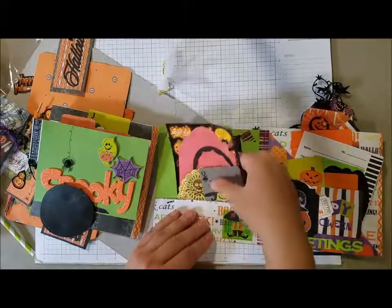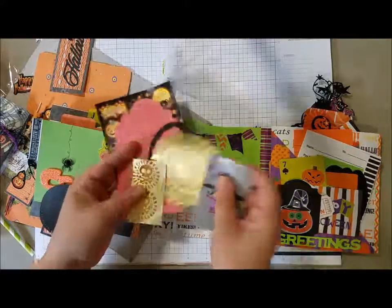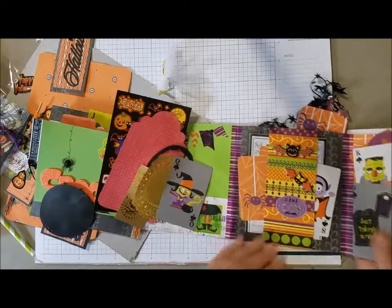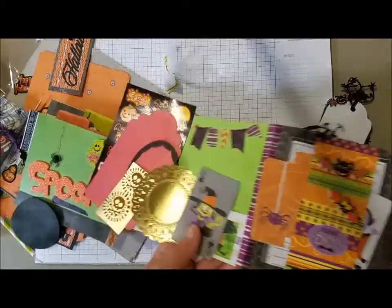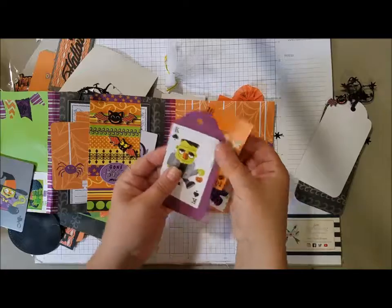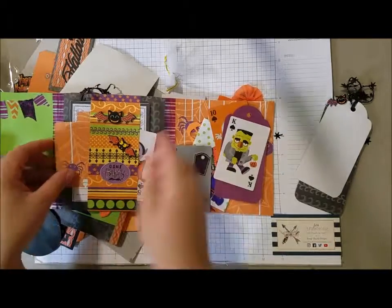And then this opens up and there's some more. Lots and lots of goodies. And this even opens up again. Look at this. It's just loaded right up. And this has a whole bunch of cards and tags and stuff on it. And it says Gone Batty.